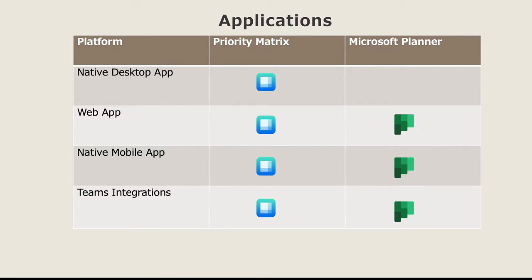Another difference between Priority Matrix and Planner is where you can actually access the application. Priority Matrix has a native desktop application that you can download for Mac, Windows, and mobile, a web application, and a full Microsoft Teams integration. Planner supports a web application for your desktop, a native mobile app, and also supports the full Microsoft Teams integration.